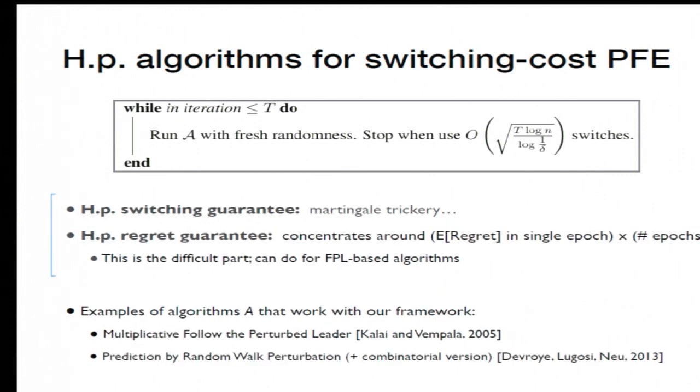So this framework is very simple, but the proof of the regret is actually surprisingly difficult, and I'll just kind of sketch the main obstacle for it. So the idea to show high probability of regret is to show the cumulative regret concentrates around the expected regret in a single epoch times the number of epochs.